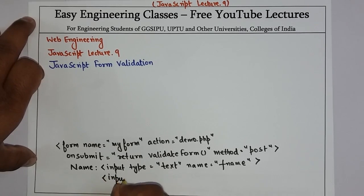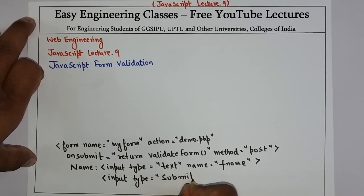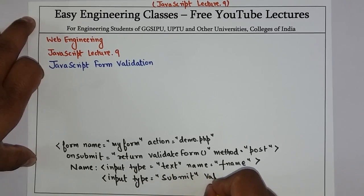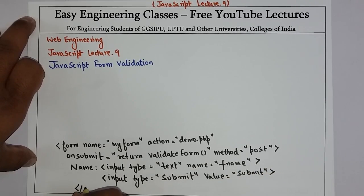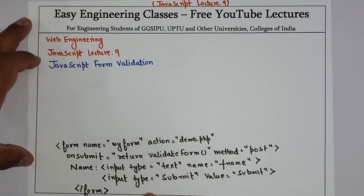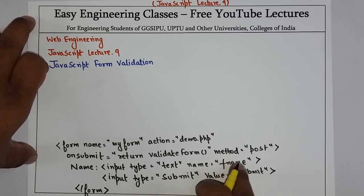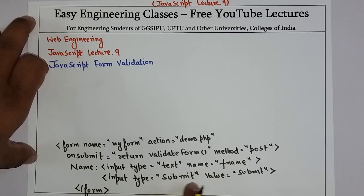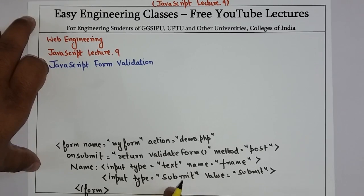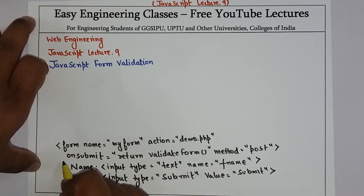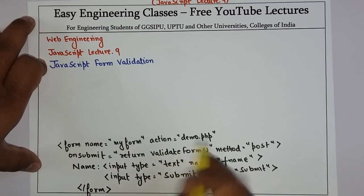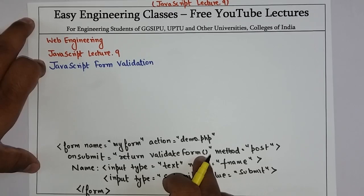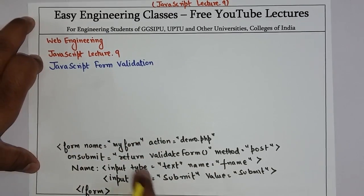Then create one button of type submit and the value is submit. So the form is created. In this form we have created one text field, the name of the text field is fname, and we have created a button of type submit. That means whenever we click this submit button, it will call this onsubmit event, and in this onsubmit event we have called the validateForm JavaScript function. So now we have to write the JavaScript function that will do the validation part.